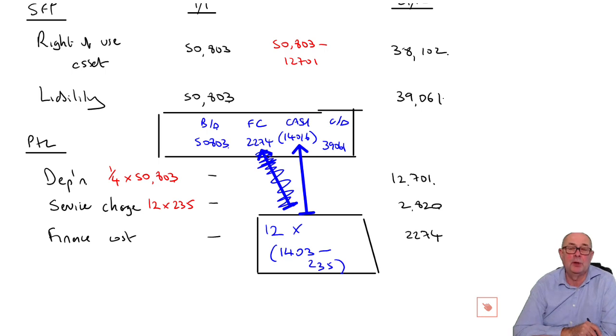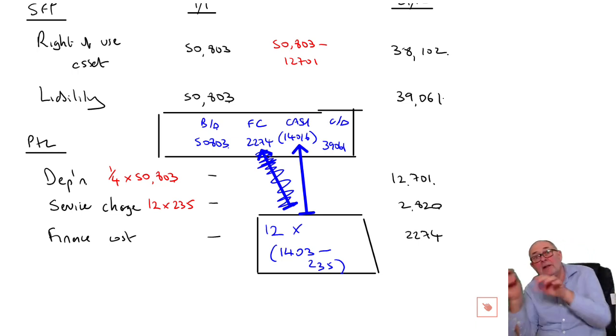The only messy bit is the cash. We're told that we make 12 payments of 1,440.3, which include the service charge. So 12 times 1,440.3 minus 235. That would give me cash paid of 14,016. So that's 39,061. There we have regular accounting for a regular four-year lease. A little bit of bookkeeping, because you had to strip the service charge out of the cash payments. Just keep your basic bookkeeping practice there.